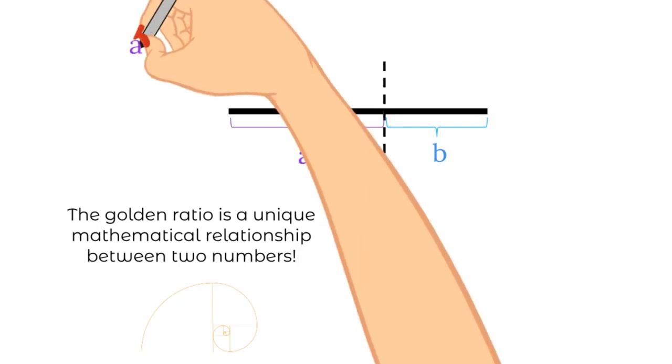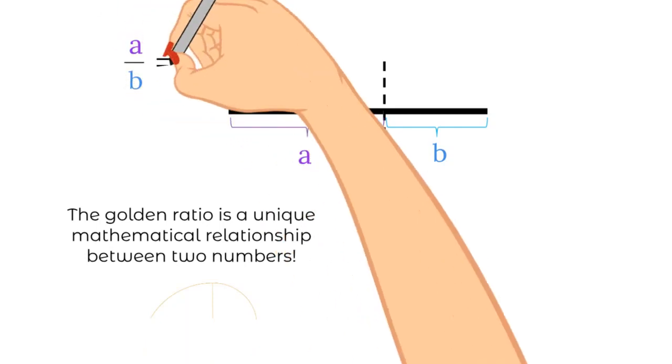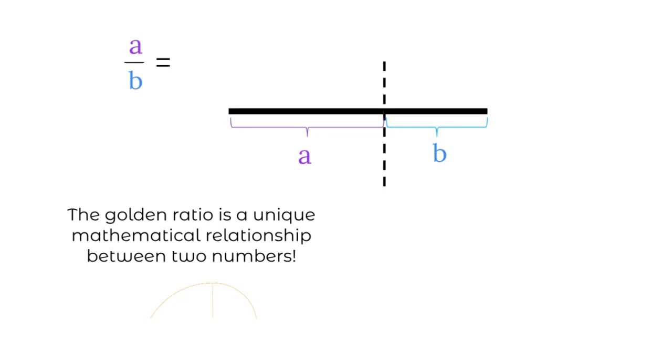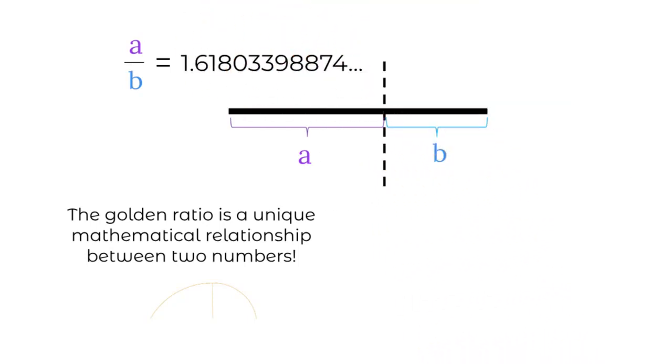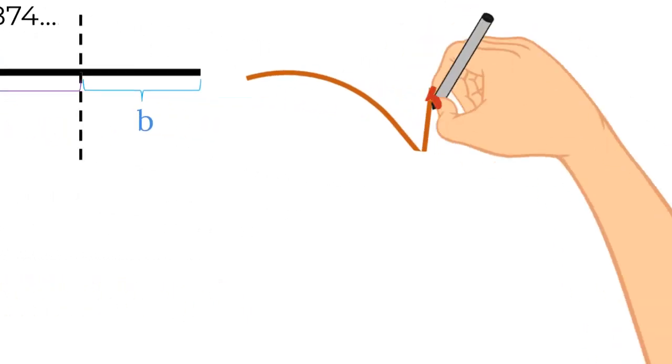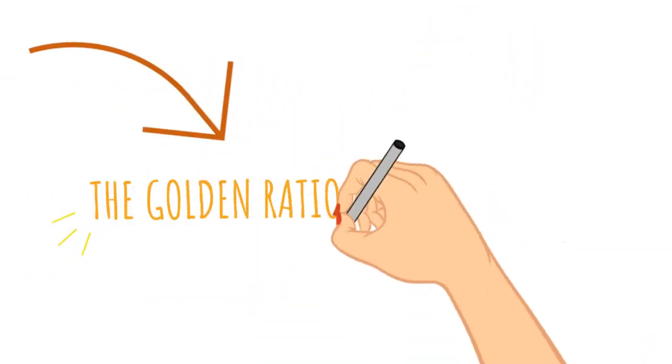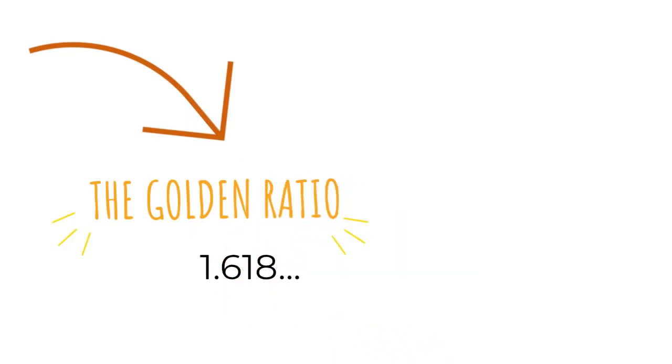We'll call the first part A and the second part B. The golden ratio occurs when A divided by B, the ratio, is equal to this irrational number that goes on forever with no repeats. And this is our golden ratio. For ease and simplicity we usually round it to 1.618 and we give it the Greek letter phi.